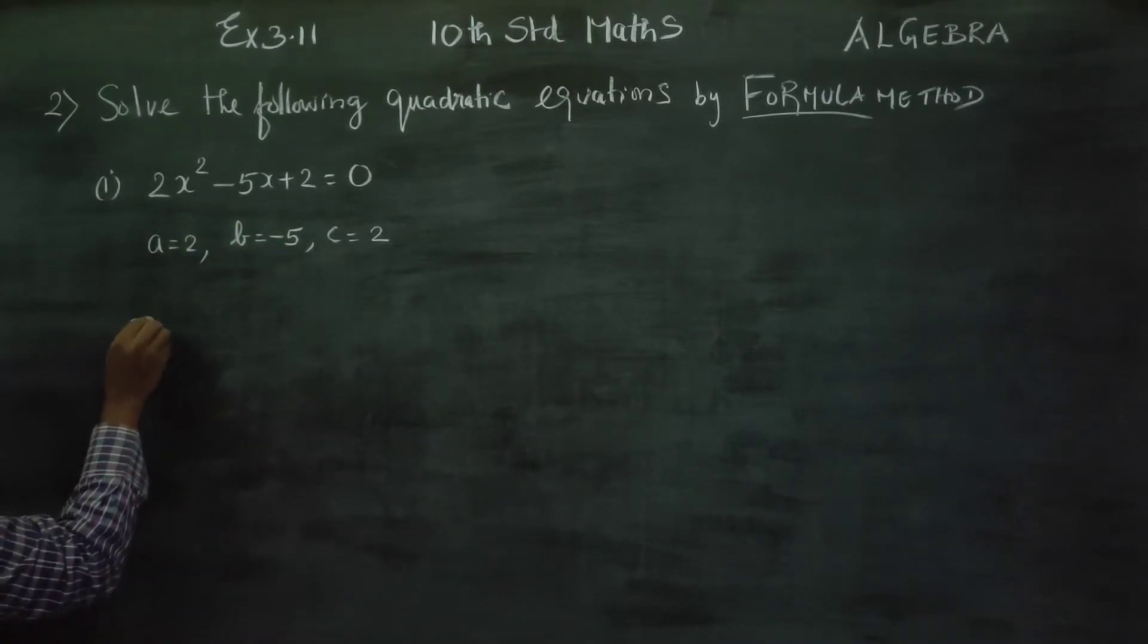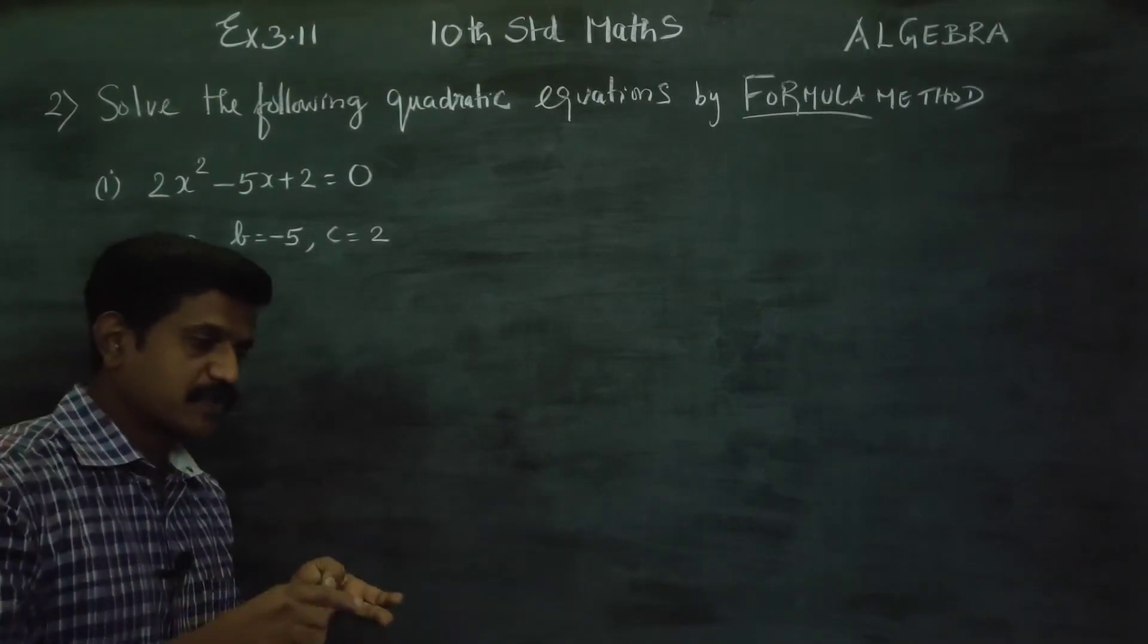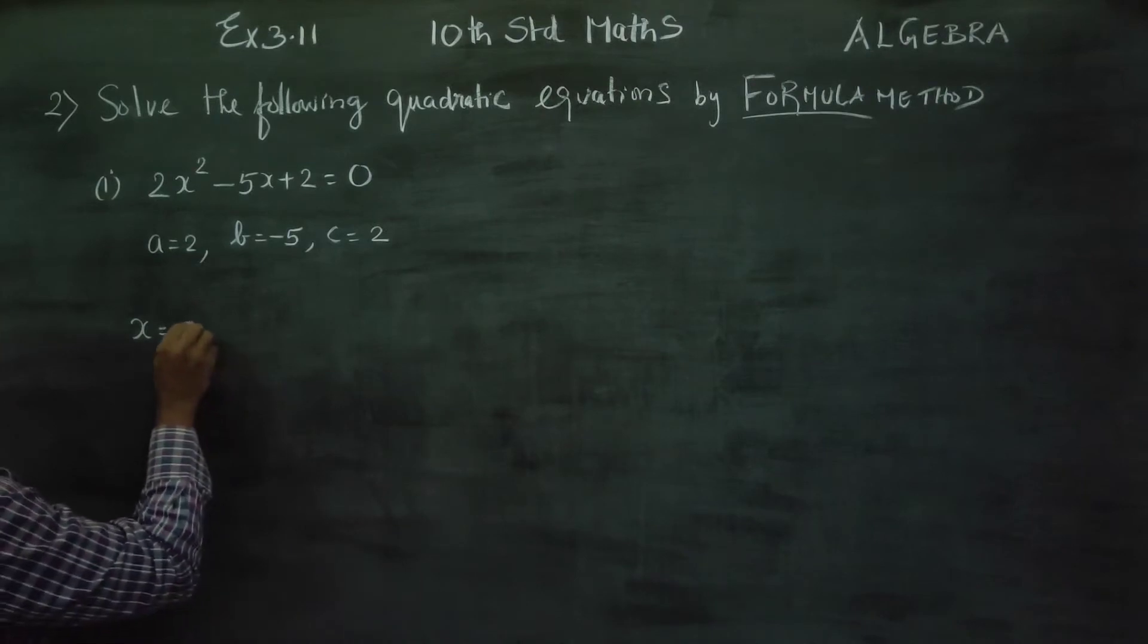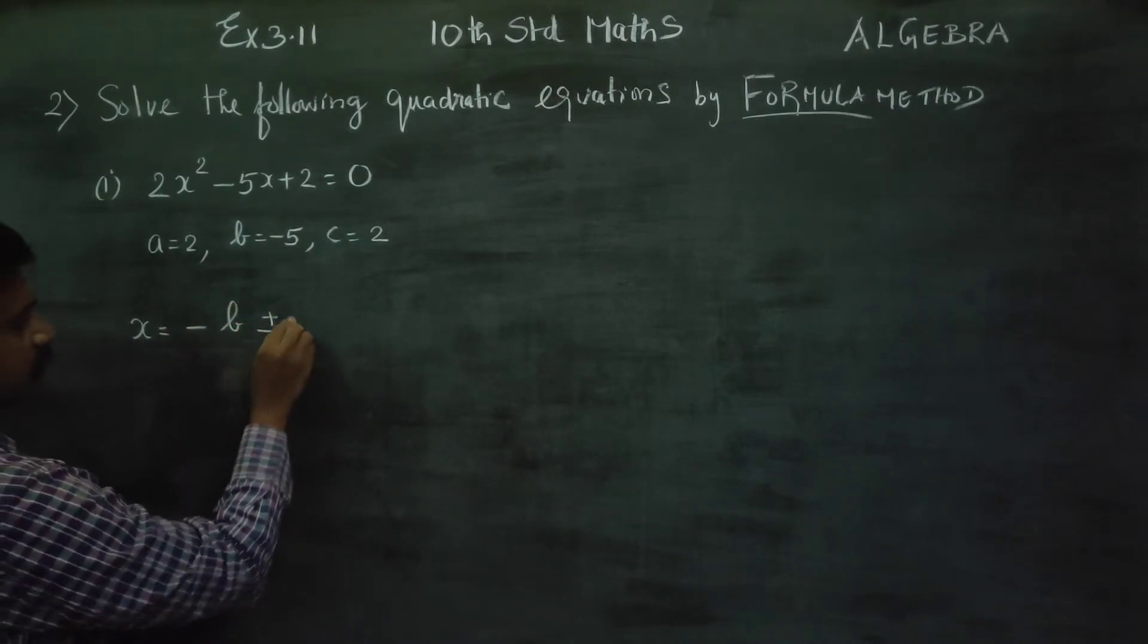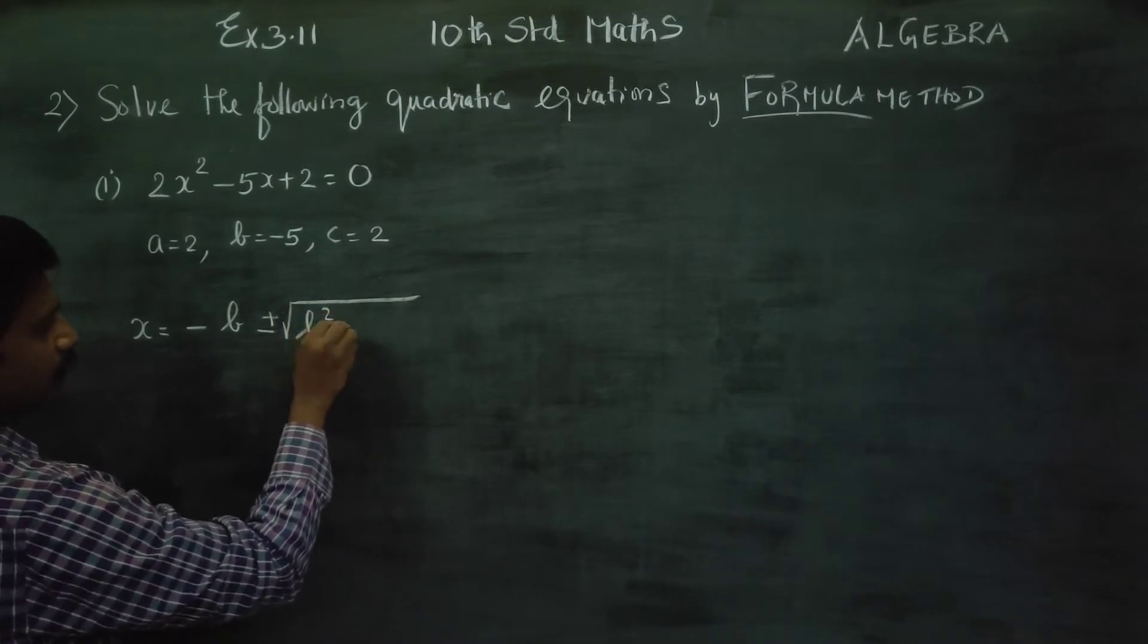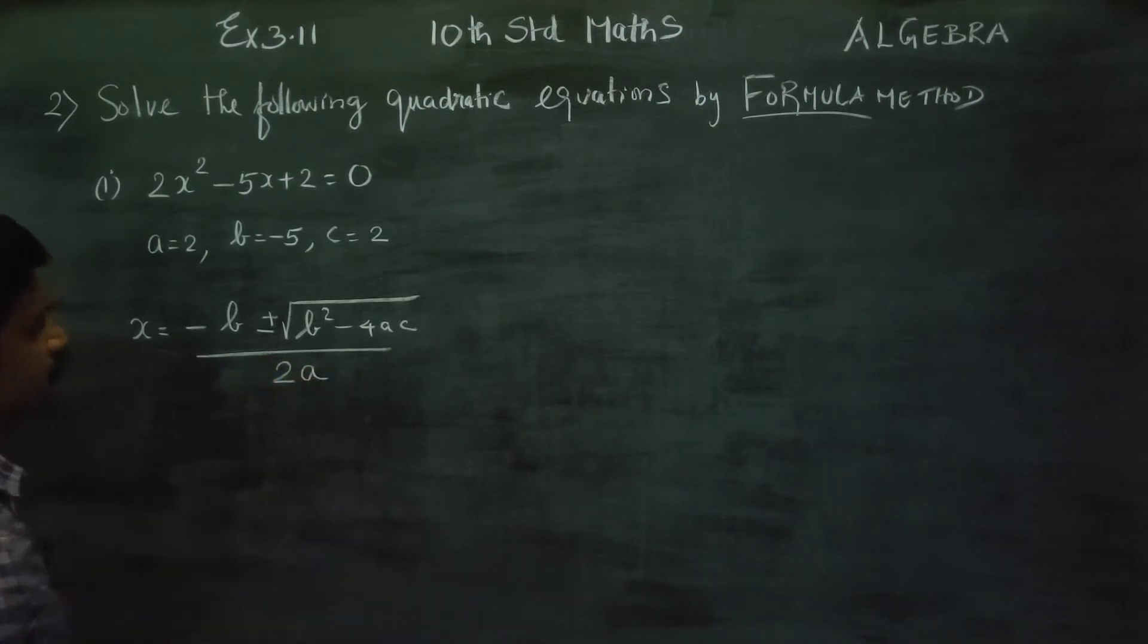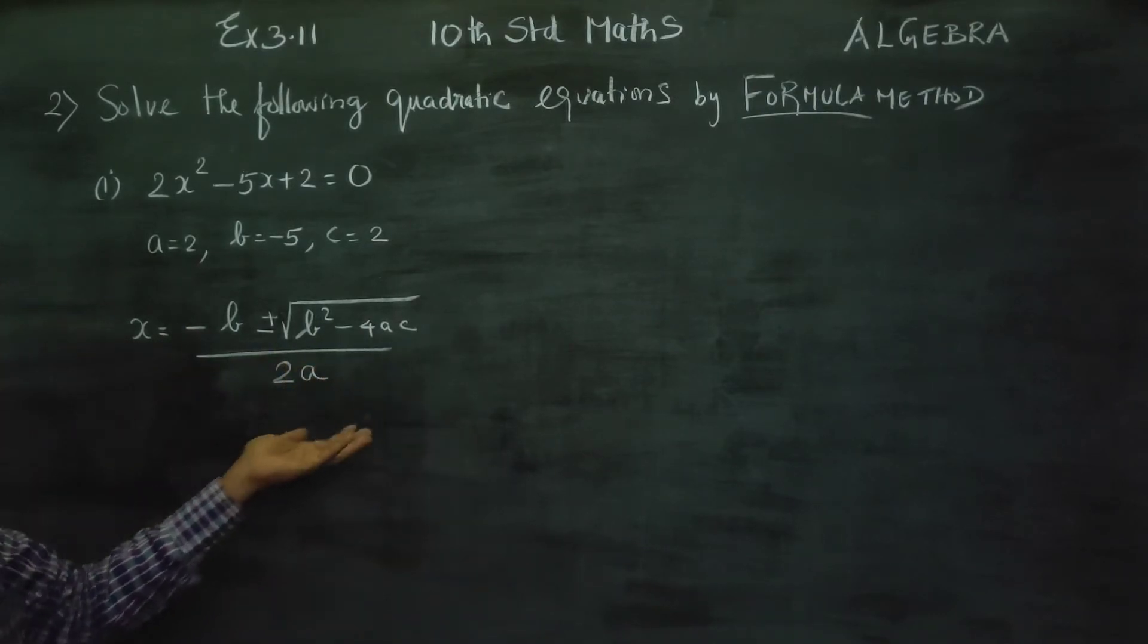Formula method, factorization method, completing square method. That is the formula: x is equal to minus b plus or minus square root of b square minus 4ac by 2a. In higher classes, this formula is used. Minus b plus or minus square root of b square minus 4ac by 2a. Now I have to substitute the answer.